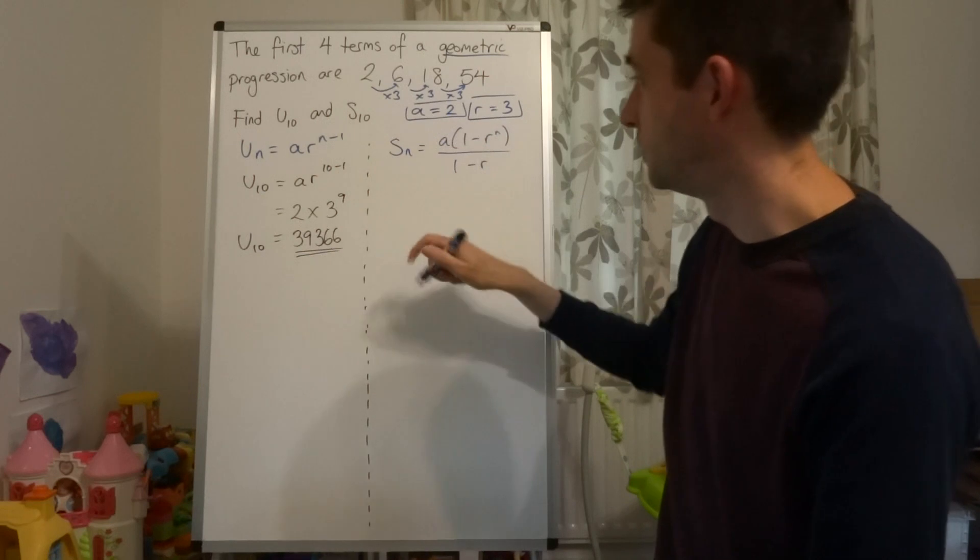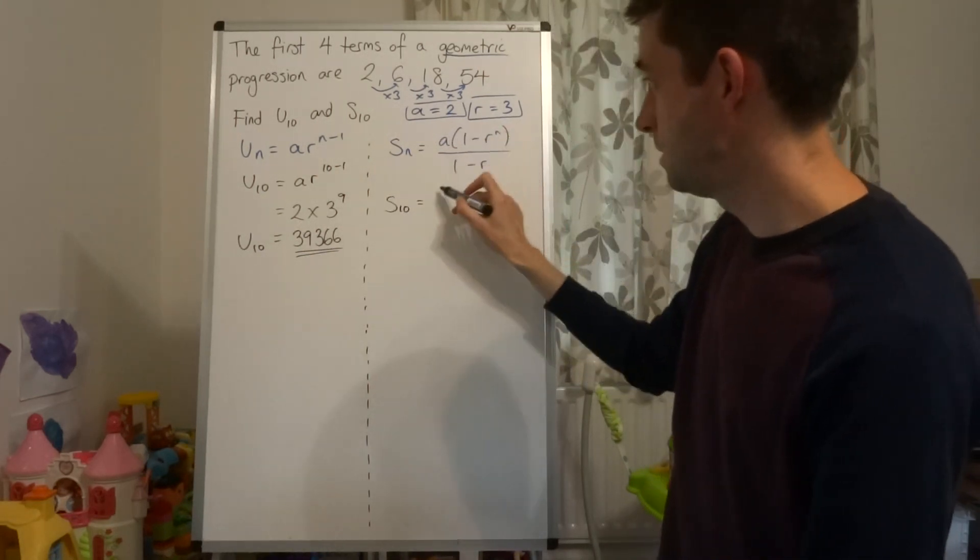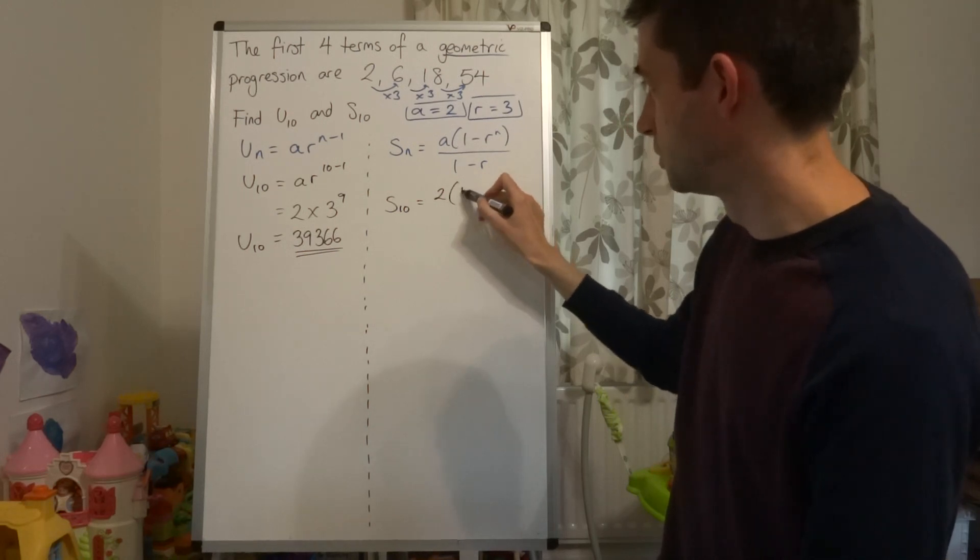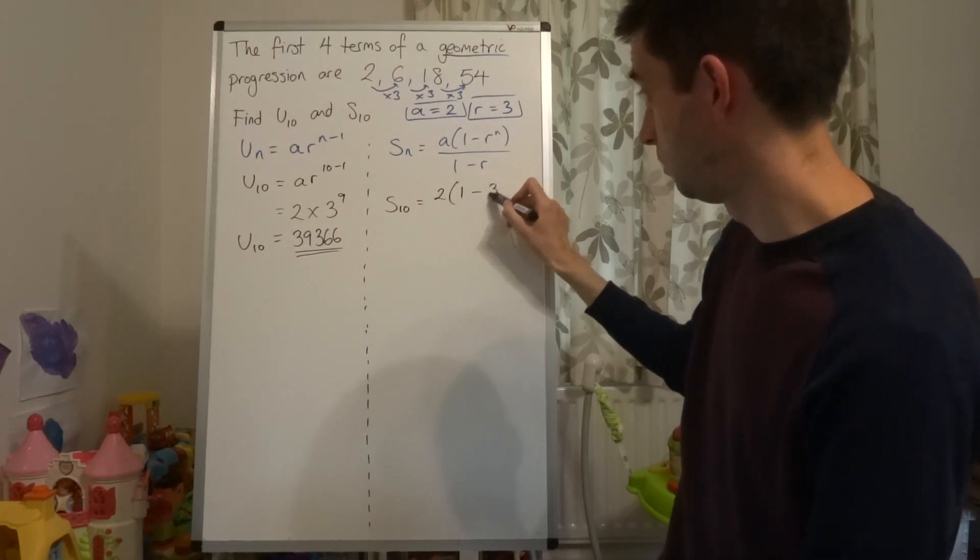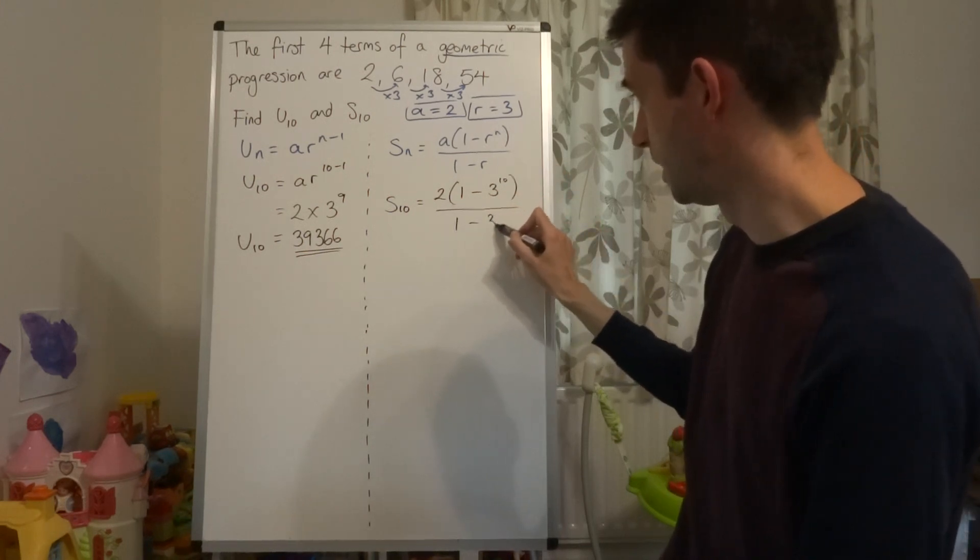Now, N is 10 - that's the number of terms. So the sum to ten terms would be A, which is 2, multiplied by 1 minus 3 (which is R) to the power of 10, all over 1 minus 3.